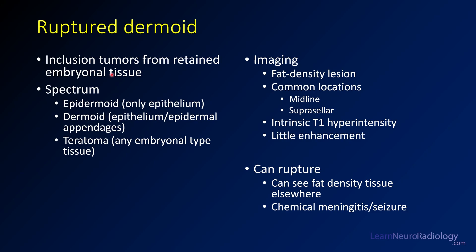Dermoids are inclusion tumors comprised of retained embryonal tissues. These are a spectrum of tumors that include epidermoid, which is comprised only of epidermis and has reduced diffusion. Dermoids have epithelium as well as the epidermal appendages, so these are the ones that can have things like hair and teeth. Teratomas also contain multiple embryonal layers. On imaging, when you have a dermoid, you're typically going to see a fat density lesion, most commonly in the midline or just off the midline — suprasellar, such as in this case.